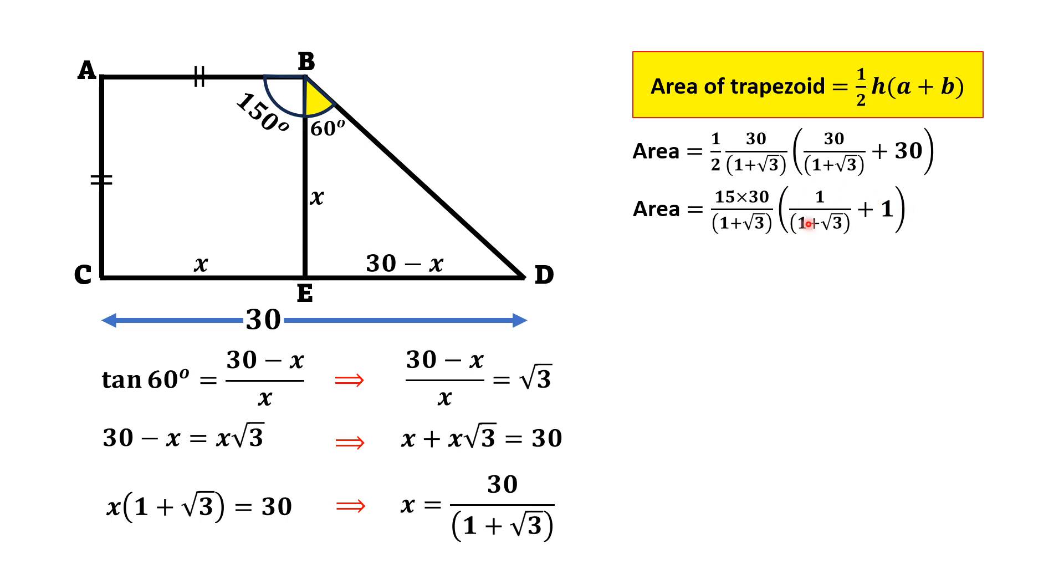Solving this one, taking the LCM, we will get 15 times 30 in the numerator, which in simplified form can be given as 450. Solving that denominator, that is (1 + √3) times (1 + √3) separately,